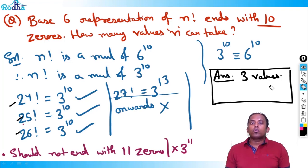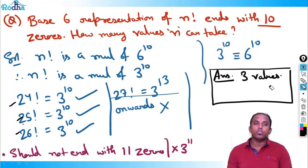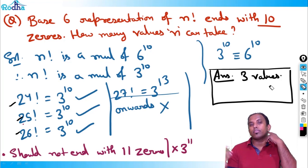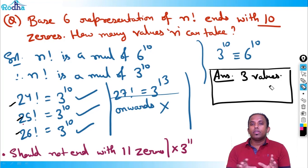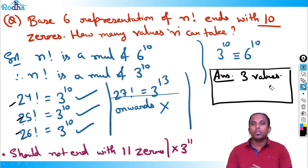This is a very good concept and I hope it's clear. You can practice by framing your own questions — for example, base 8 representation ends in 20 zeros and solve it. In the next video we'll practice a few more questions on base system. Thank you for watching.